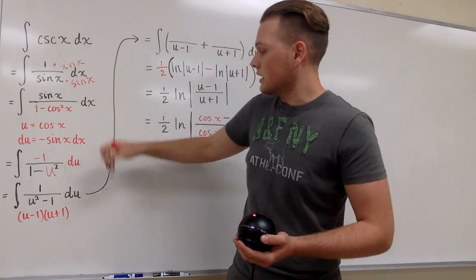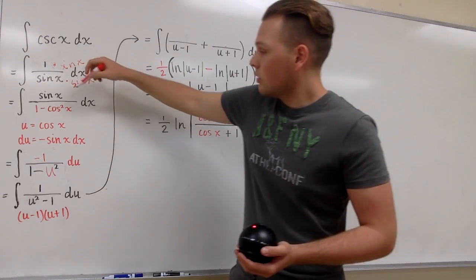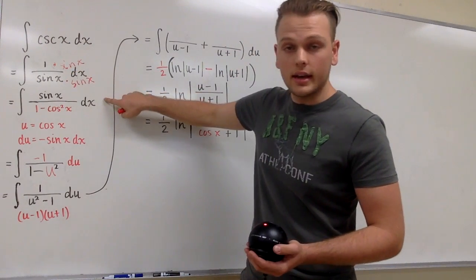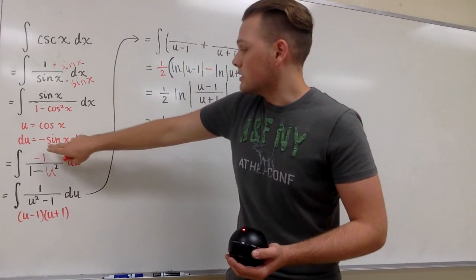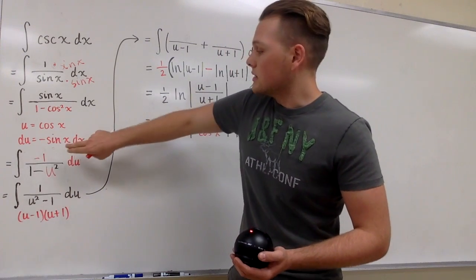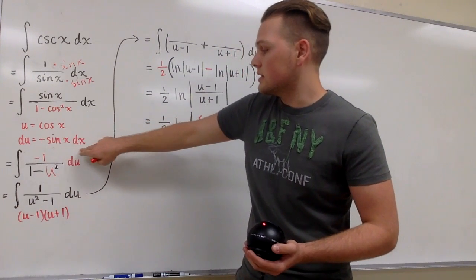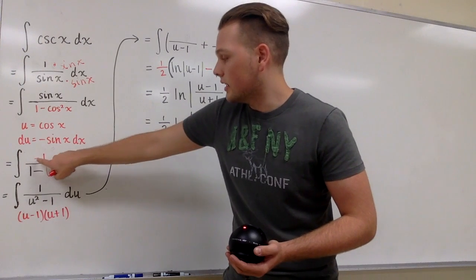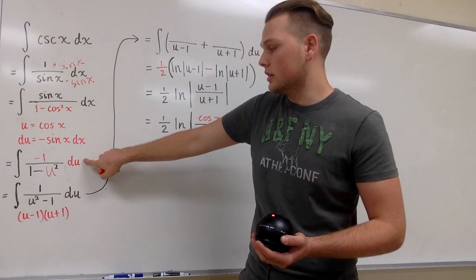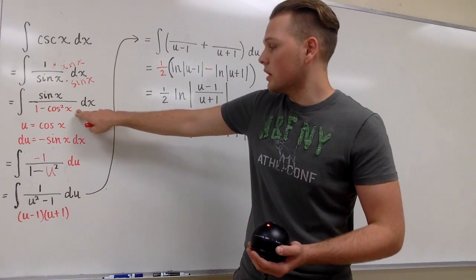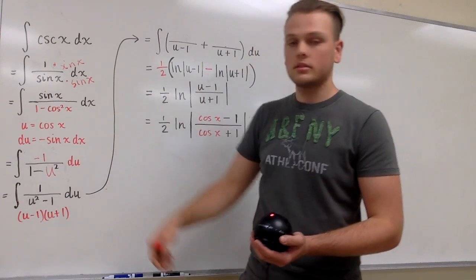So now all together, for sine x dx we're going to substitute in du. Since we have this negative in front of the sine x dx, that's why there's a negative 1 on top with the du, and then on bottom we're just going to substitute the u for cosine x.